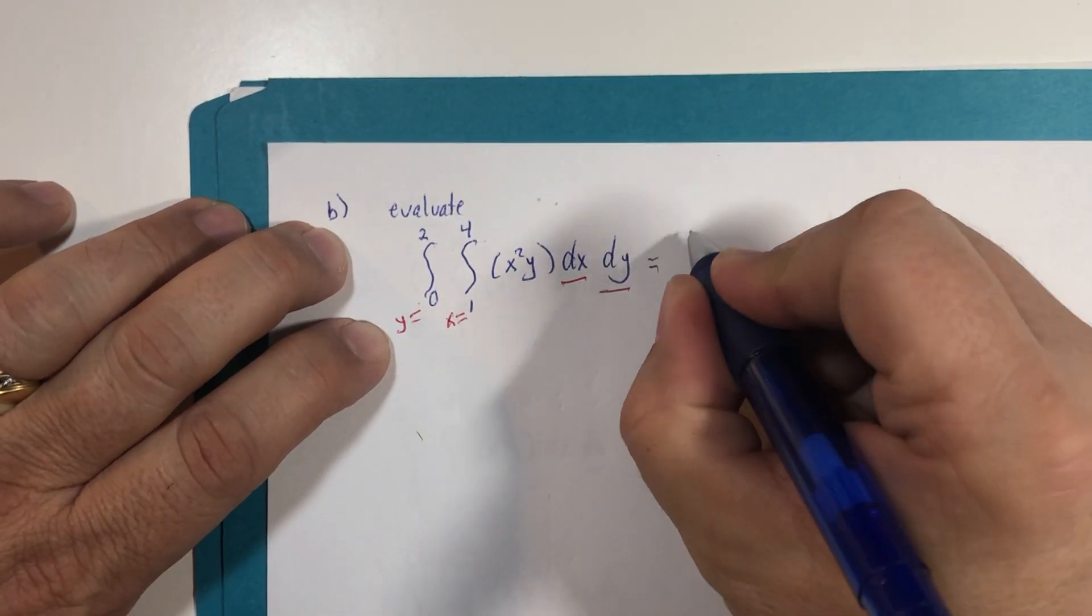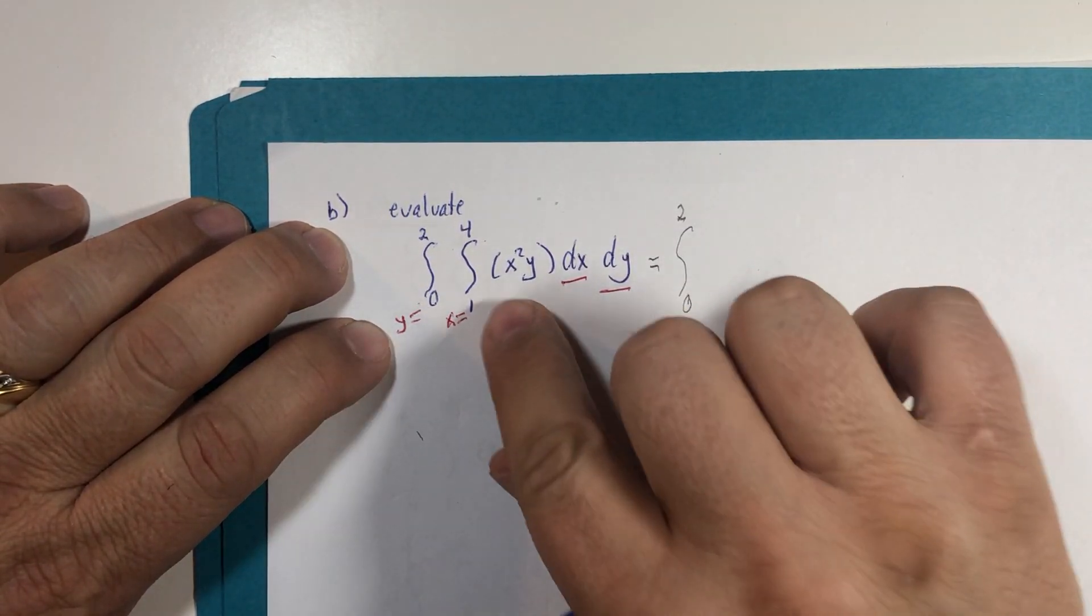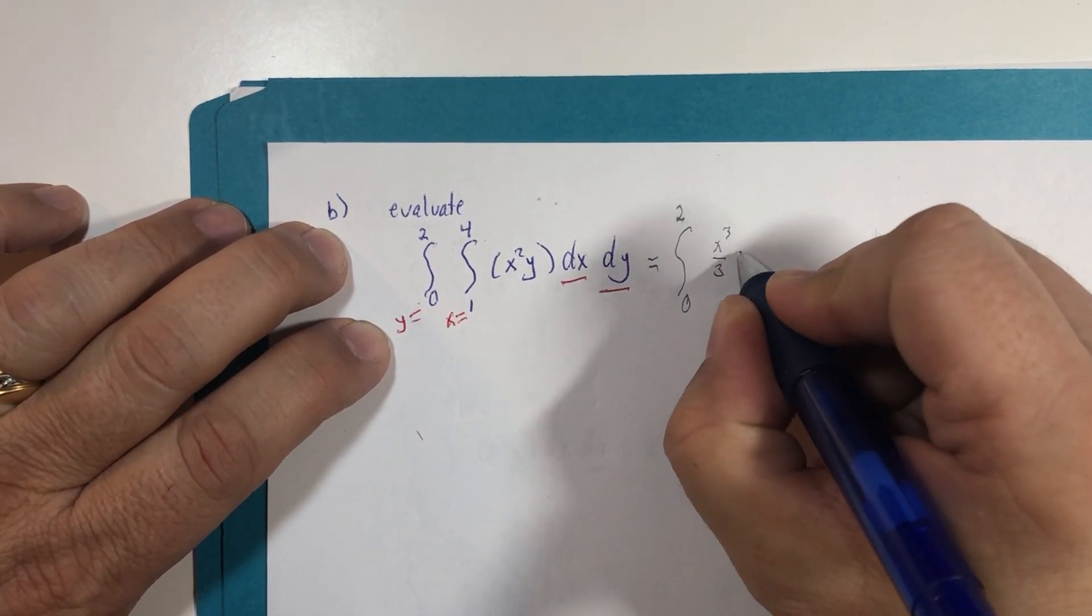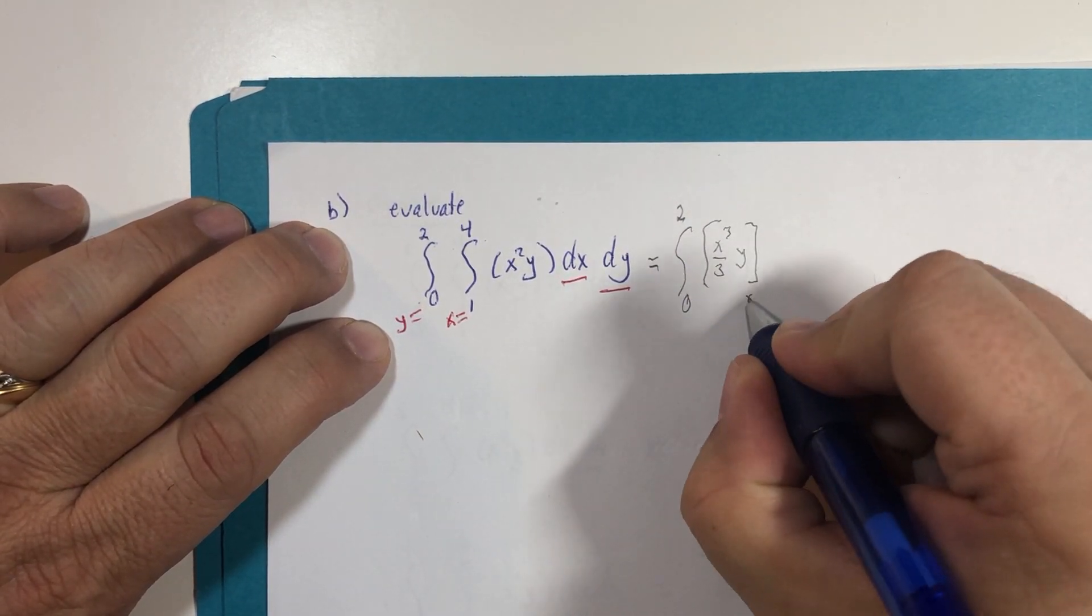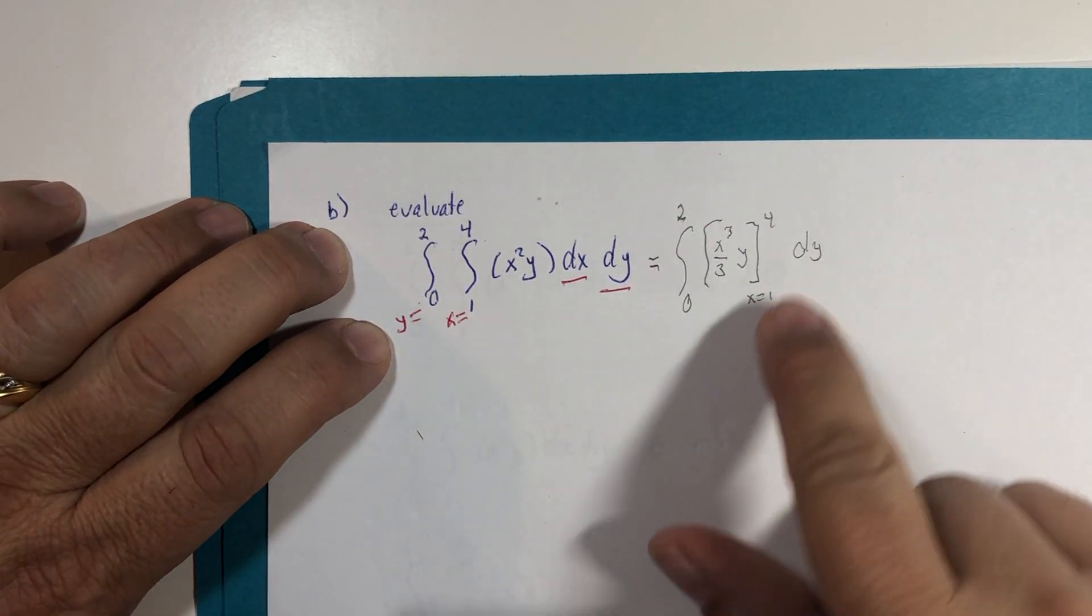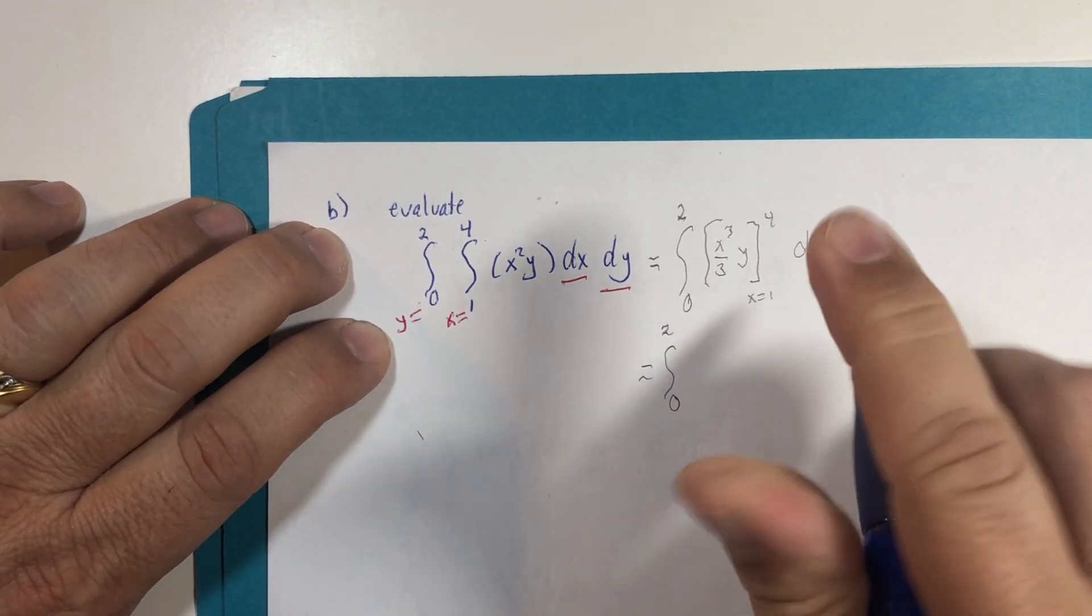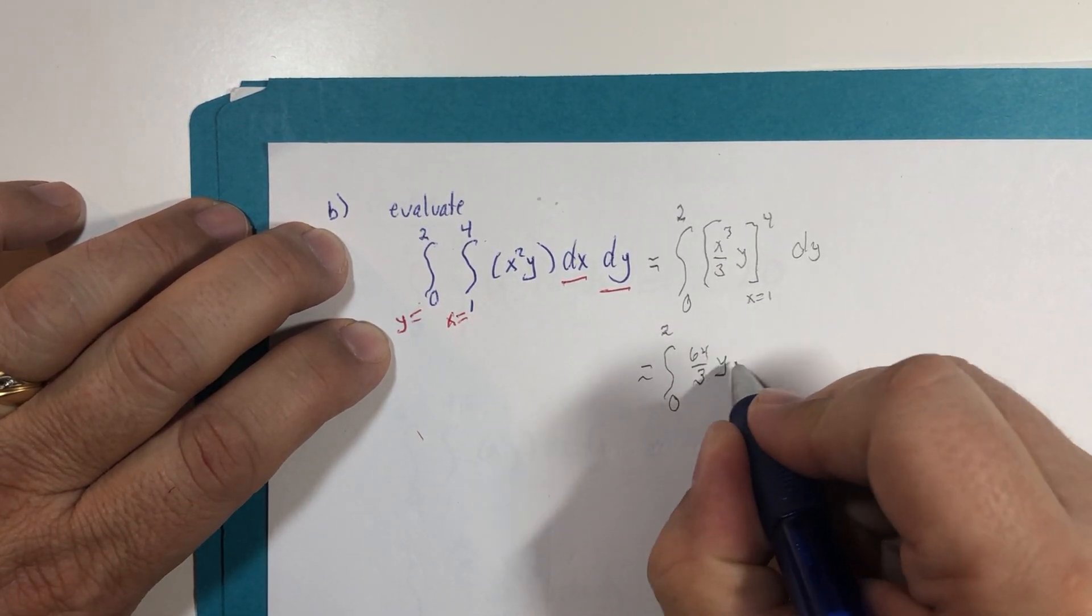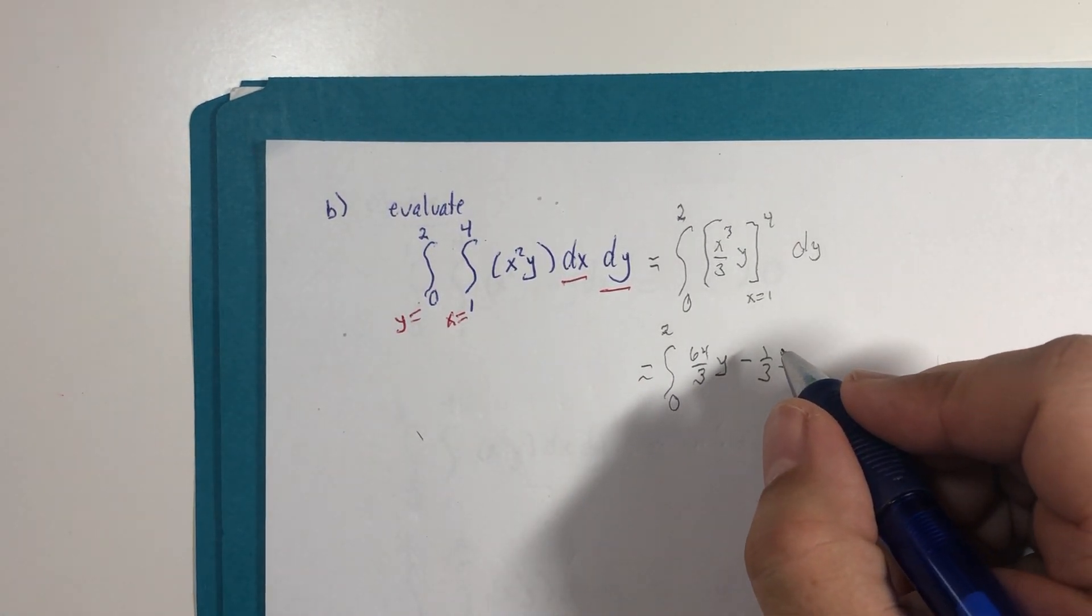So the first antiderivative, zero to two, is going to be x squared is the variable part of the expression. We're going to get x cubed over three times the constant y. X goes from one to four. We'll integrate with respect to y later. And we're going to evaluate this and get from zero to two. 64 thirds y minus one third y. All right, so that's what we're up to so far.